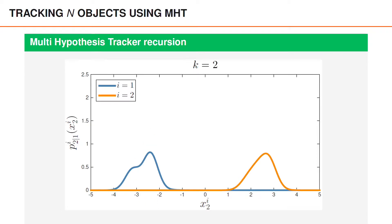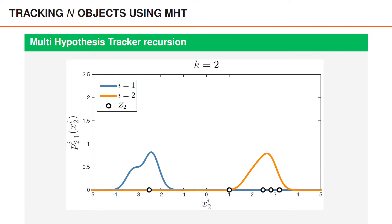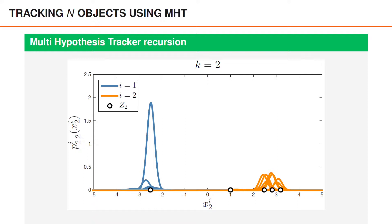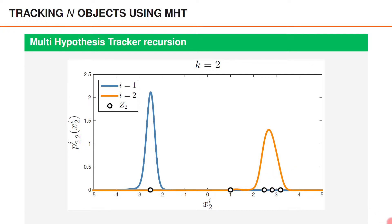Next we predict to time two, where there are five measurements. For each predicted hypothesis and each association we now get a posterior hypothesis. For object one there is one hypothesis with higher weight than the others, and for object two there are several hypotheses that are approximately equally likely. Looking at the marginals, both object densities have one significant peak. This illustrates how MHT works: prediction followed by an update producing posterior hypotheses for each data association. MHT also includes pruning and capping, which we will look at in a later example.